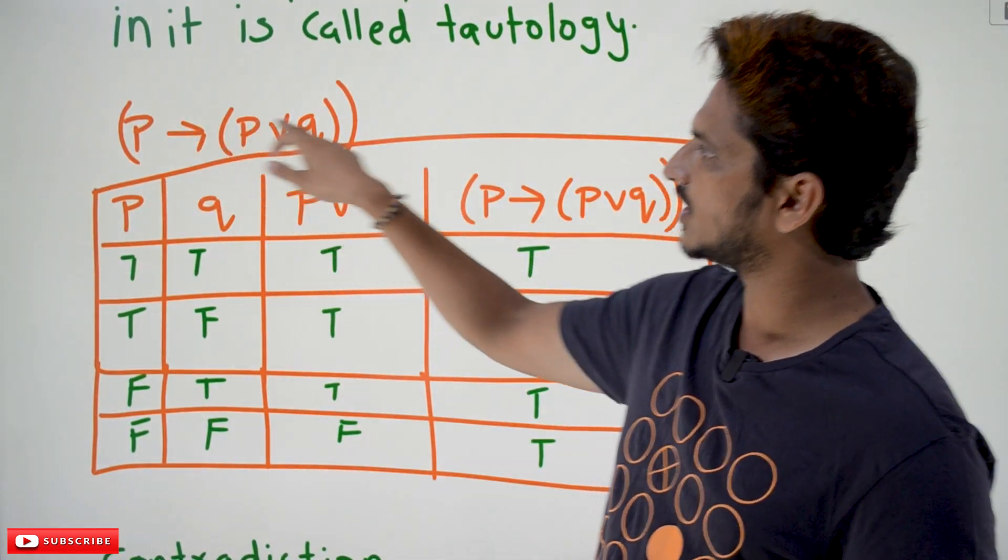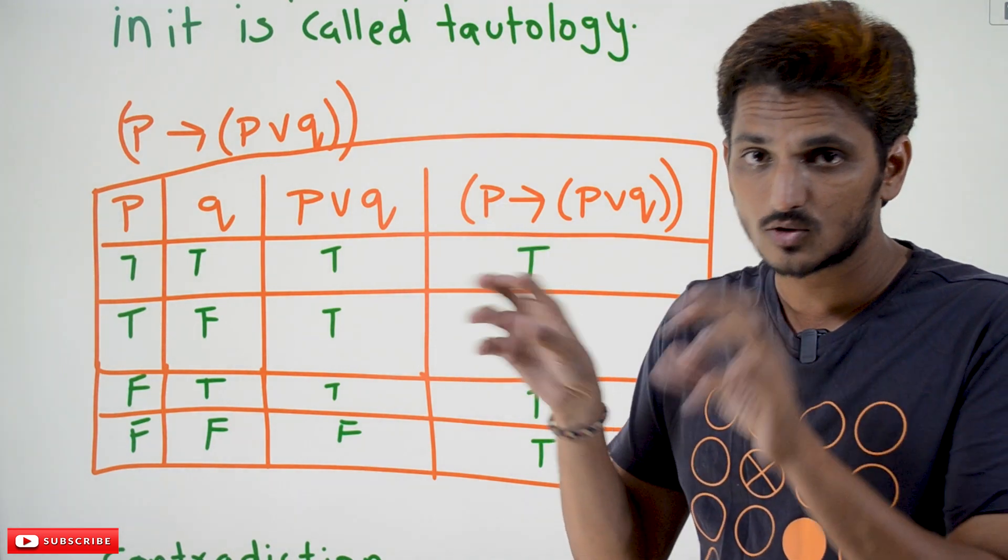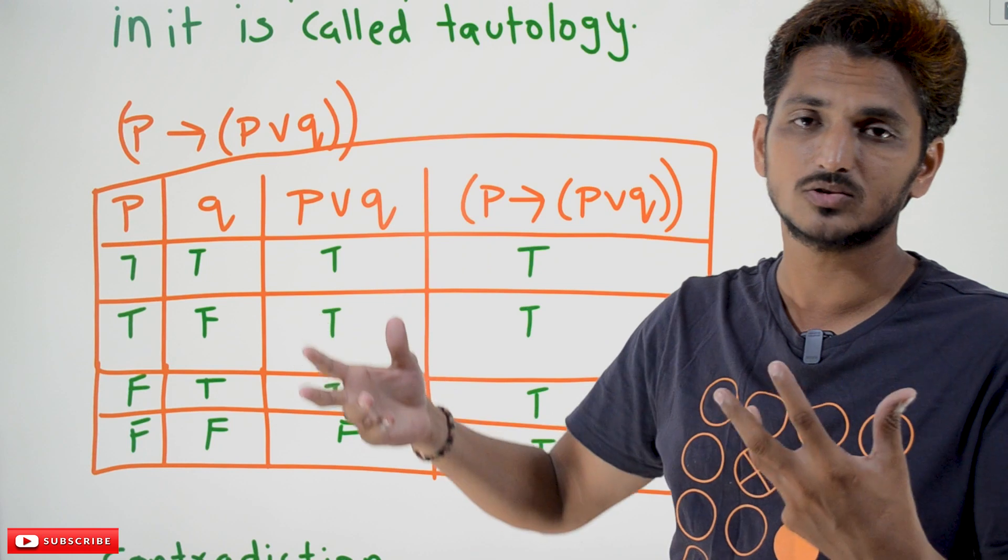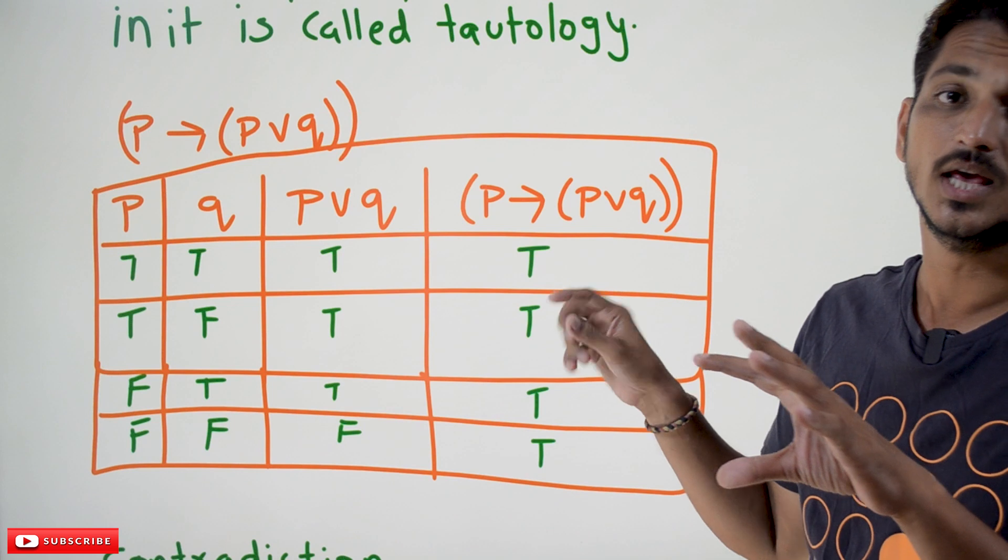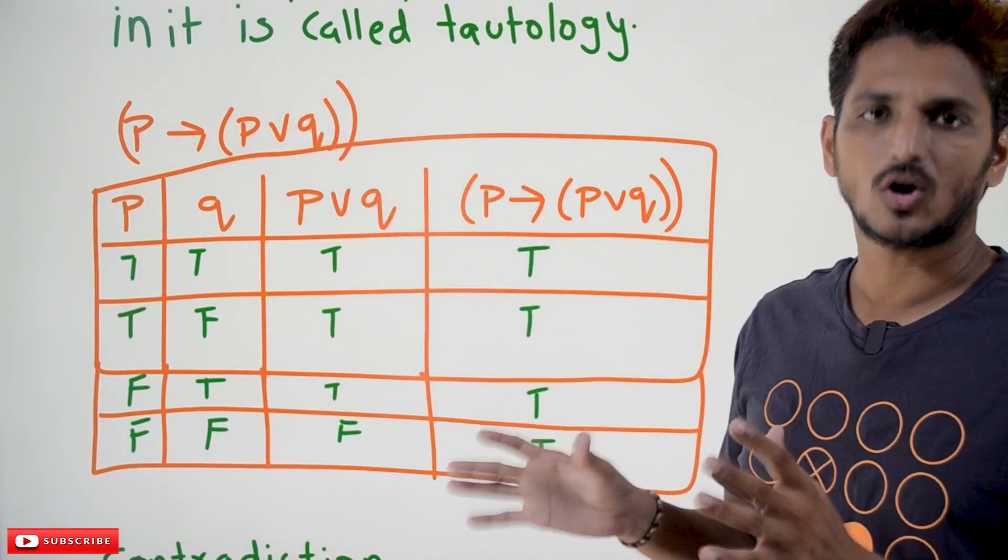Let us take a compound proposition. This is a compound proposition. Whatever the truth values you are going to insert in this proposition, means you can give any truth values to P and Q, but our output should always be true. If that happens, this proposition we call it a tautology.